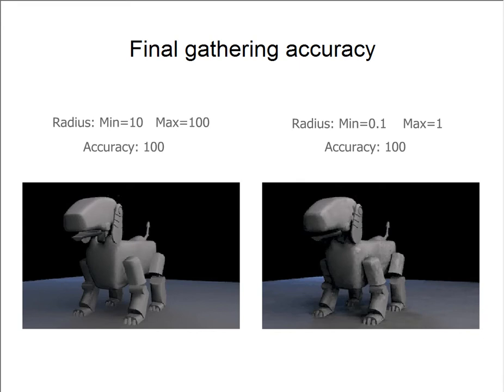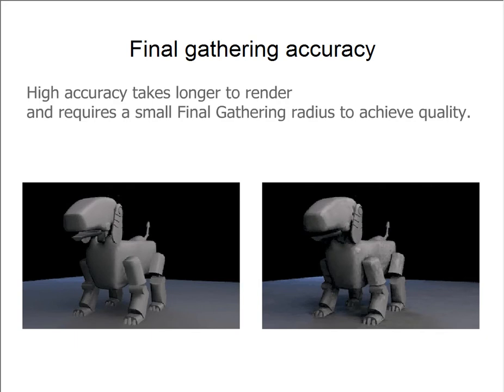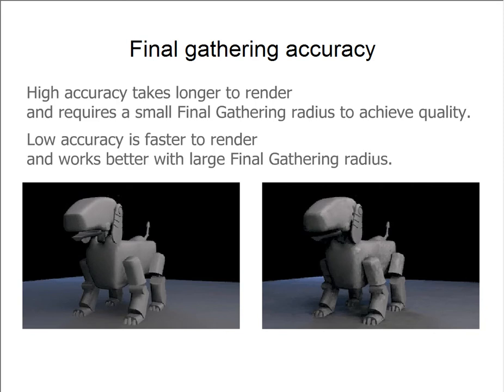To summarize: high accuracy takes quite a bit longer to render and it requires a smaller final gathering radius to actually pay off and get good quality results. Lower accuracy is fast to render and works best with large final gathering radiuses, giving you a blurry indirect illumination effect that renders quickly, but it's not as accurate as you might want.